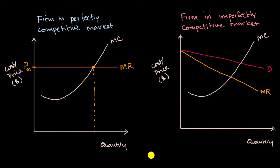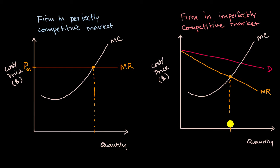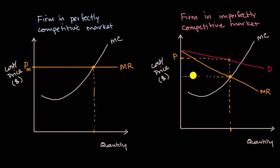In this situation, what would it be rational for the firm to do? Once again, it would want to produce the quantity where marginal cost is equal to marginal revenue — so they would produce this quantity right over here. But notice something interesting: if they produce at this quantity, the price they can get in the market is much higher than that marginal cost and marginal revenue at that point.